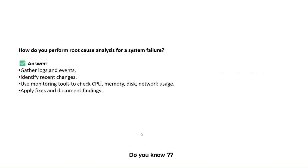How do we perform root cause analysis for a system failure? First, check the log events. Identify what changes are currently happening and why. Check whether any recent updates caused the issue. Use tools to check CPU, memory, disk, and network usage. Sometimes the system hangs because utilization is beyond 100%. In that case, end specific applications that are not required, apply fixes, document the findings, and use the root cause analysis results to fix the underlying problem.